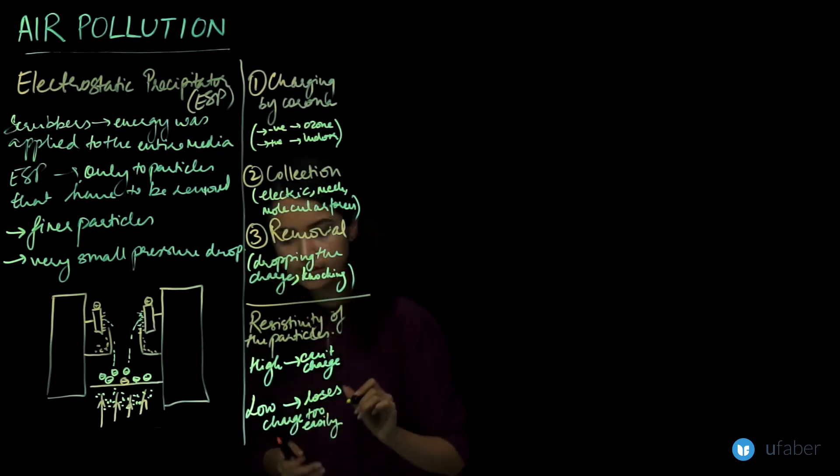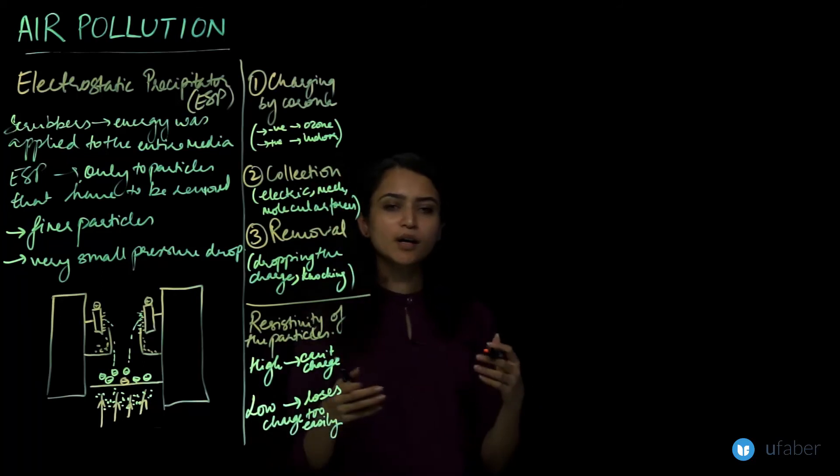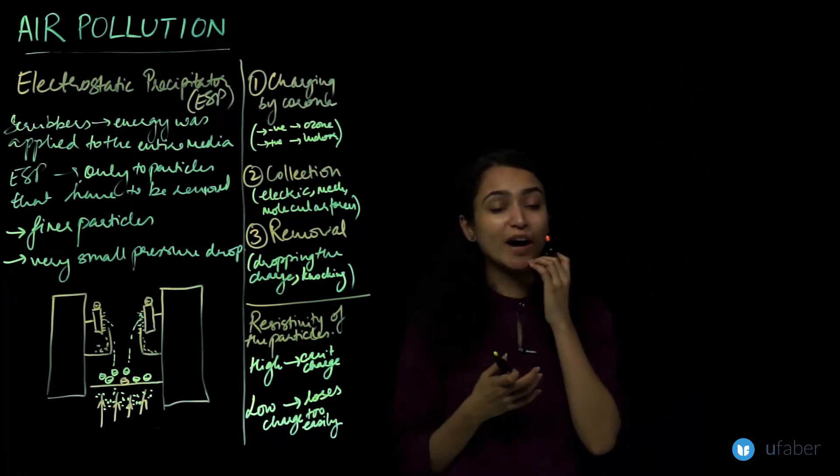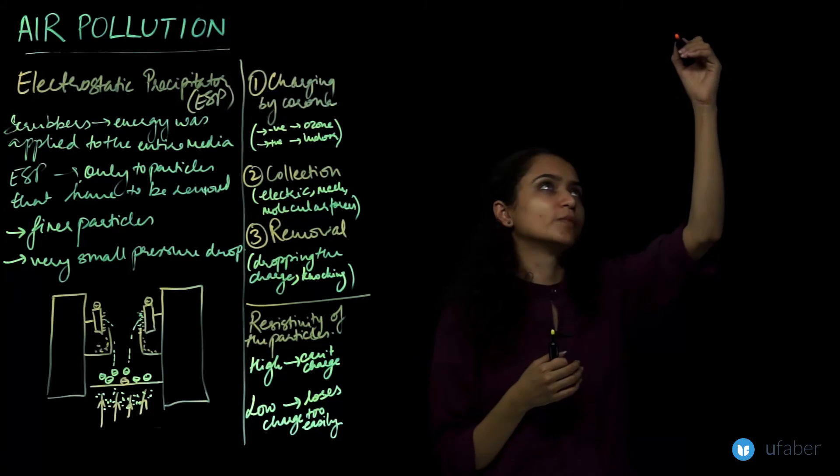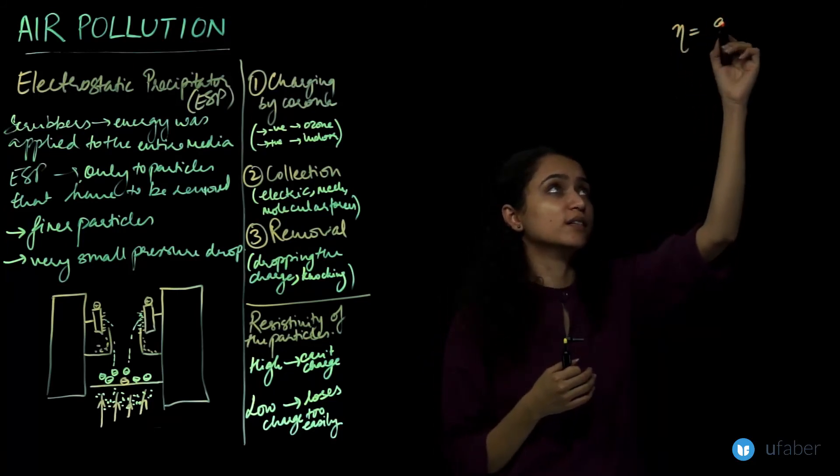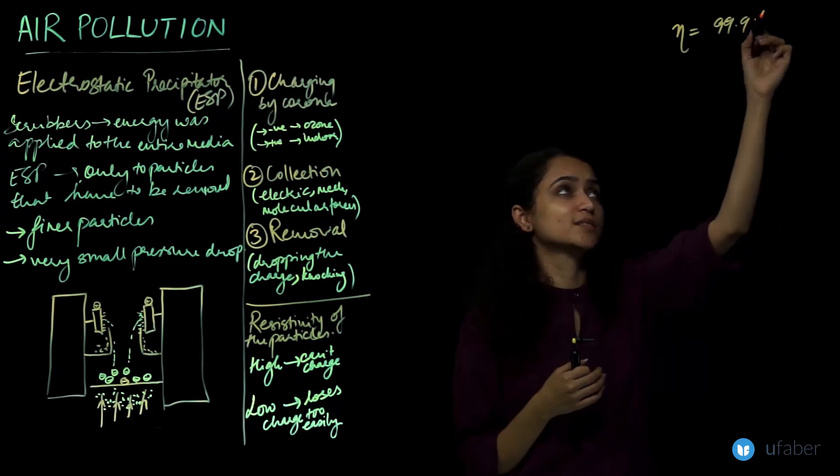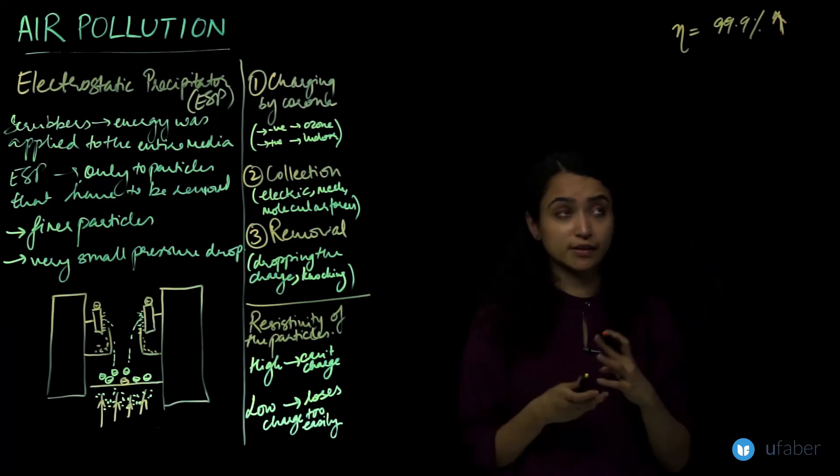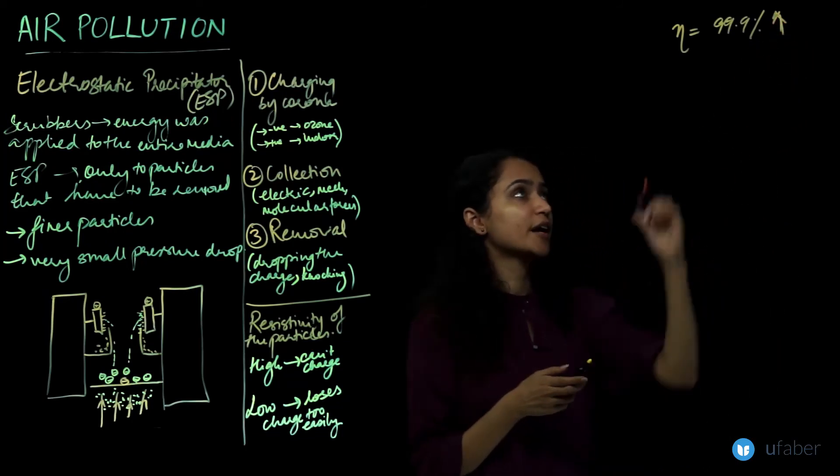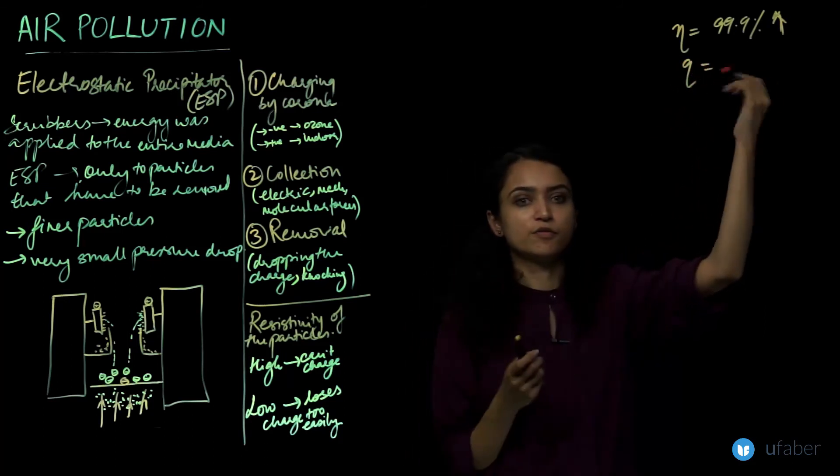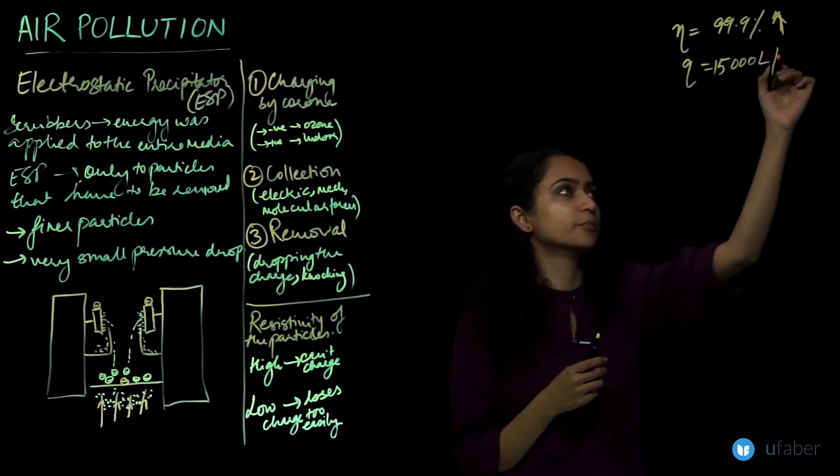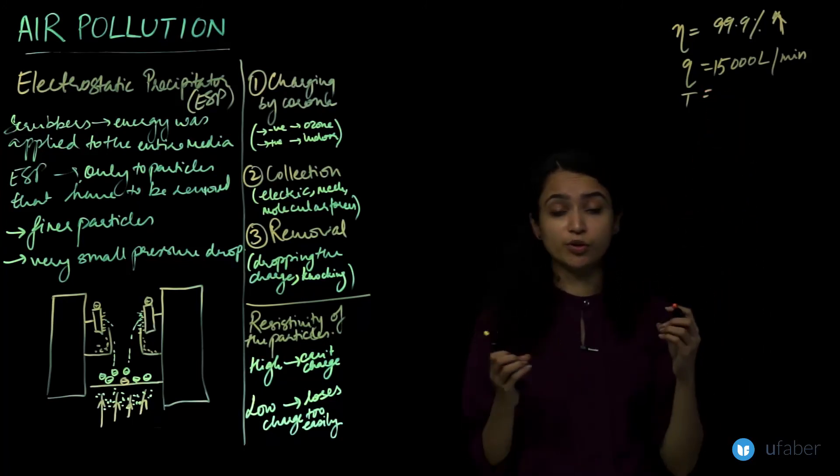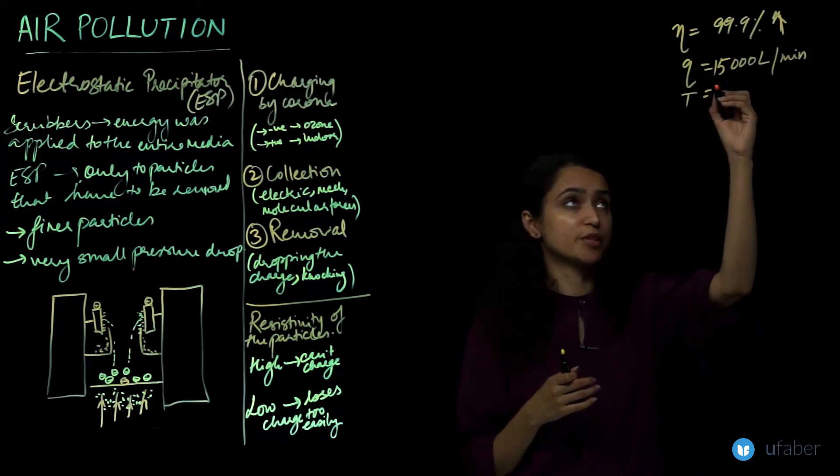Coming to some advantages of precipitators, the main advantage why it is widely used is that it has a very high efficiency. The efficiency is mostly 99.9% and up in almost all practical applications. It can handle very high flow rates at around 15,000 liters per minute. It can handle very high temperatures, so you can have a hot gas directly coming into an electrostatic precipitator.